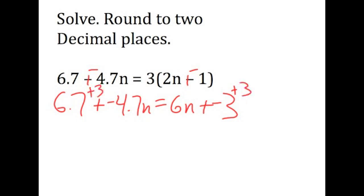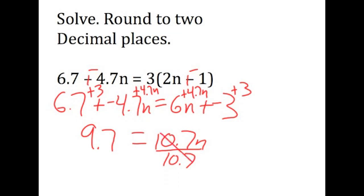6.7 plus 3 is 9.7. At the same time, I'm allowed to add positive 4.7n to both sides. 6n plus 4.7n is 10.7n. Then I divide both sides by 10.7. This is where the calculator comes in. Don't try to do this without a calculator. You won't have time to finish before the end of the period. We're rounding, so I use approximately equal, and it's 0.91 is approximately equal to n.